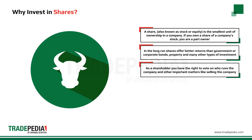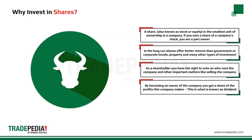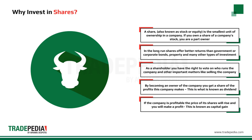By becoming an owner of the company you get a share of the profits the company makes. This is what is known as a dividend. If the company is profitable, the price of its shares will rise and you will make a profit on your investment. This is known as a capital gain.